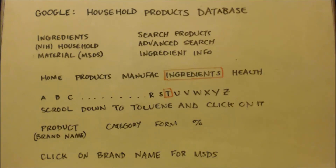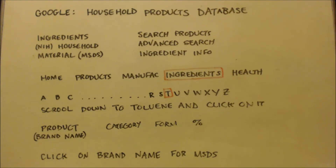That's basically the whole thing. This is how I look stuff up now. For example, if I wanted sodium acetate, I'd go to that site, hit ingredients, hit 'S' instead of 'T,' scroll down to sodium acetate, click on it, and it'll give you a list of brand names. You want a high percentage. Not all results are useful — I looked up acetaldehyde and got like 10 products, all with one percent or less.